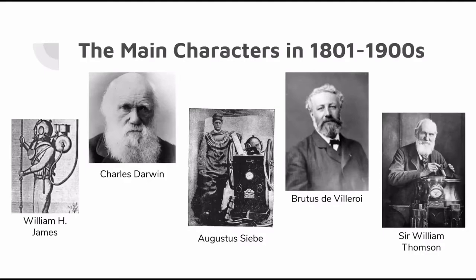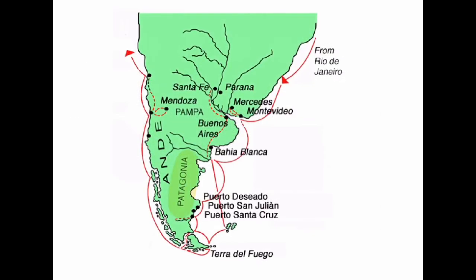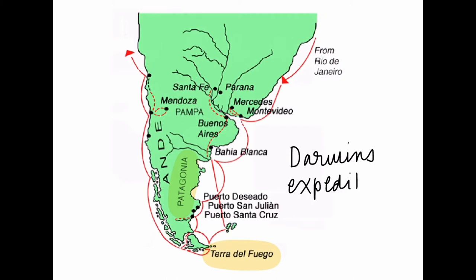Charles Darwin went on an expedition to islands in 1831. He studied plants and animals and made discoveries which eventually led to his theory of evolution. Darwin also had a theory on coral reef atolls in 1842, which stated that reefs formed as islands.